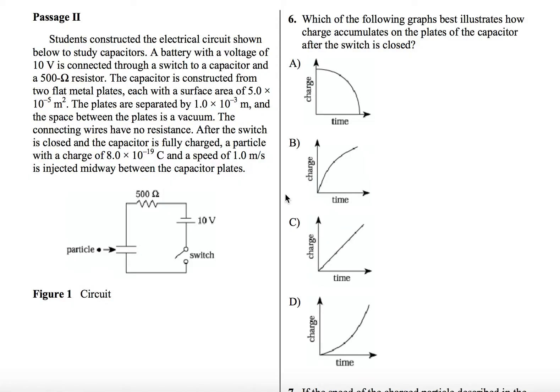So let's just get right into it. So students constructed the electrical circuit shown below to study capacitors. A battery with a voltage of 10 volts is connected through a switch to a capacitor and a 500 ohm resistor.